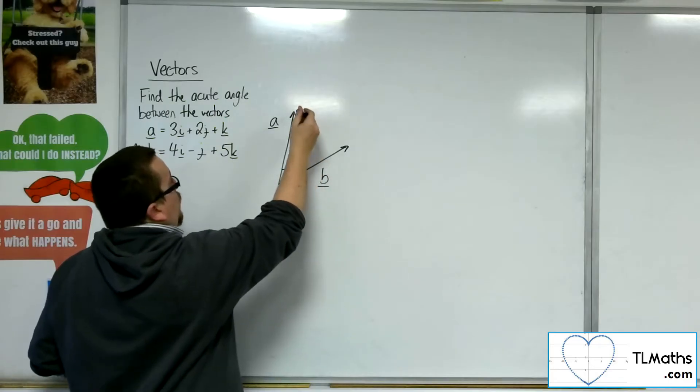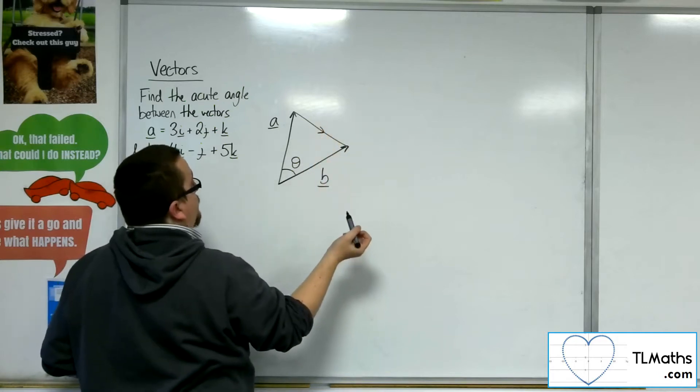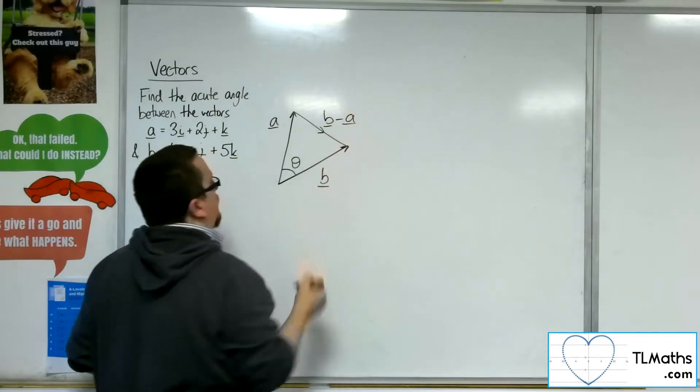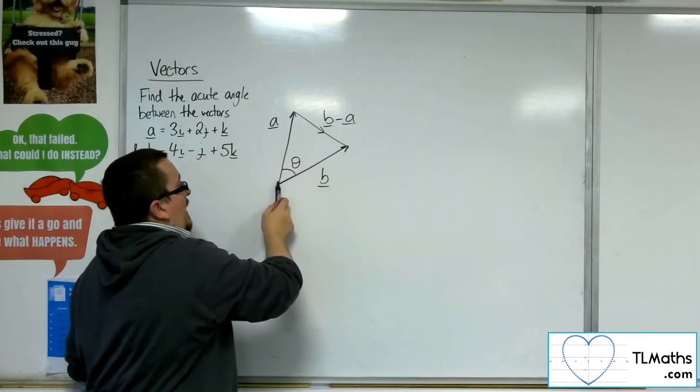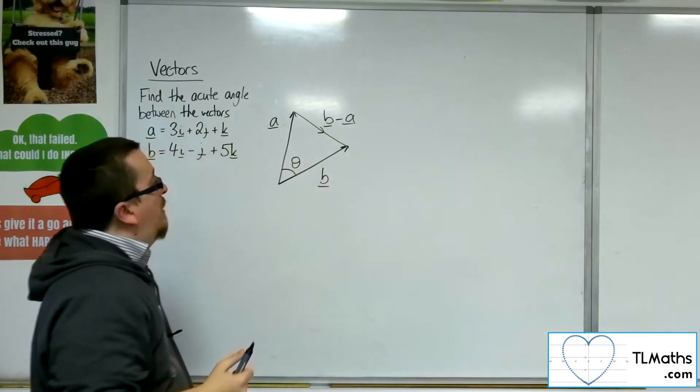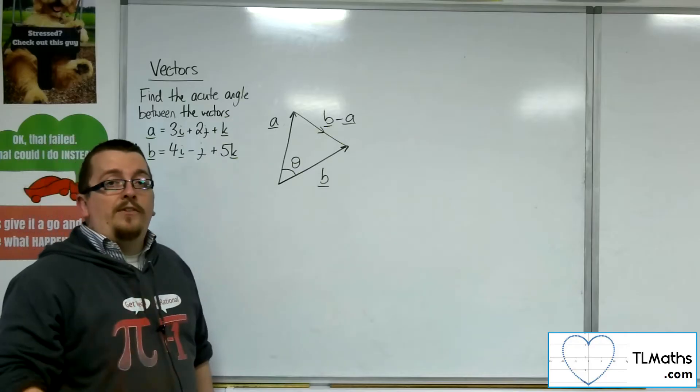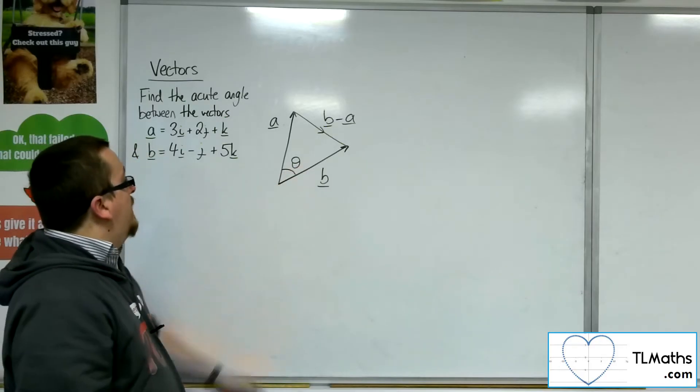And so what I could do is I could look at this vector here, and that would be the vector B minus A. So going from there to there is going back along A, then along B, so minus A plus B or B minus A. And then thinking about this as a triangle, use the cosine rule to work out theta.